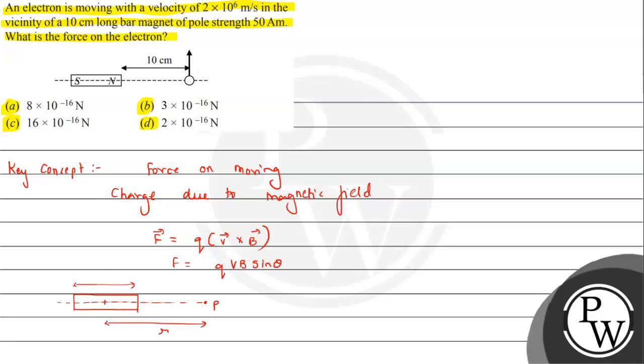If we consider the length of bar magnet as L, the expression we have calculated is, because it is axial point, 2μ₀/4π times M/(r² - L²)², where capital M is the magnetic dipole moment.